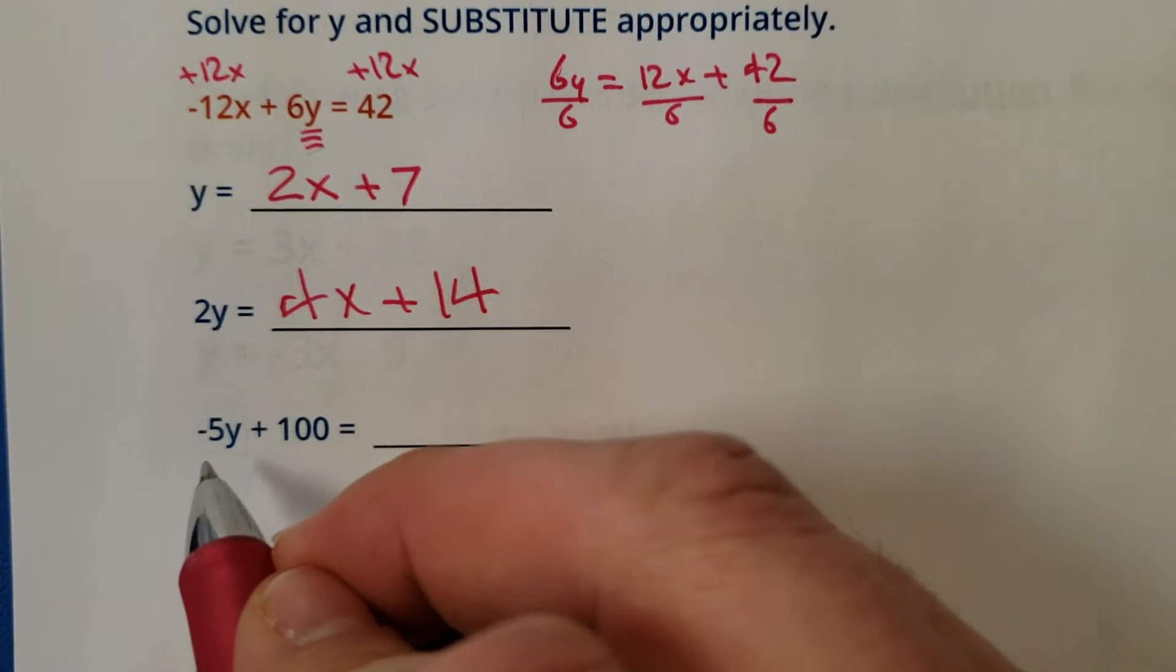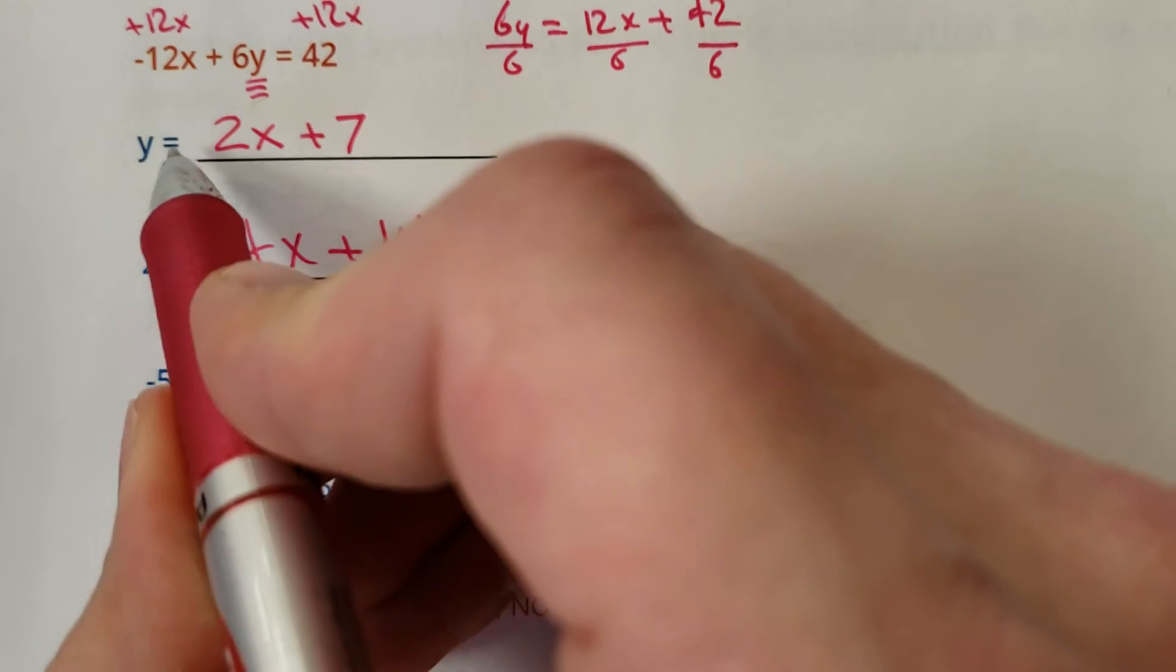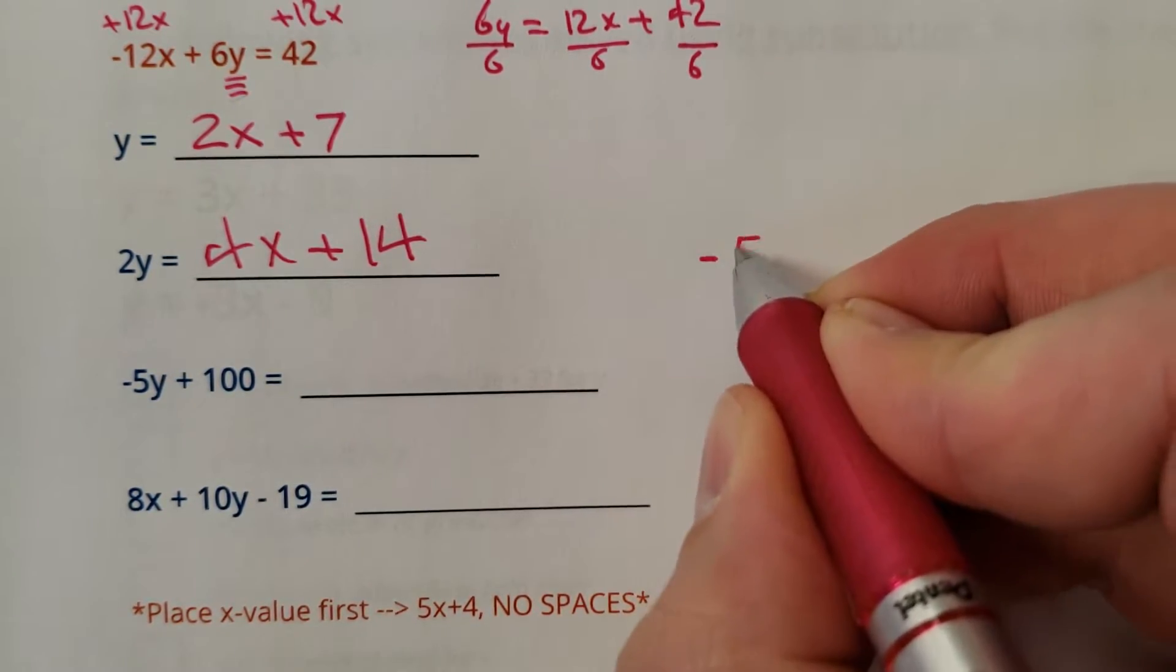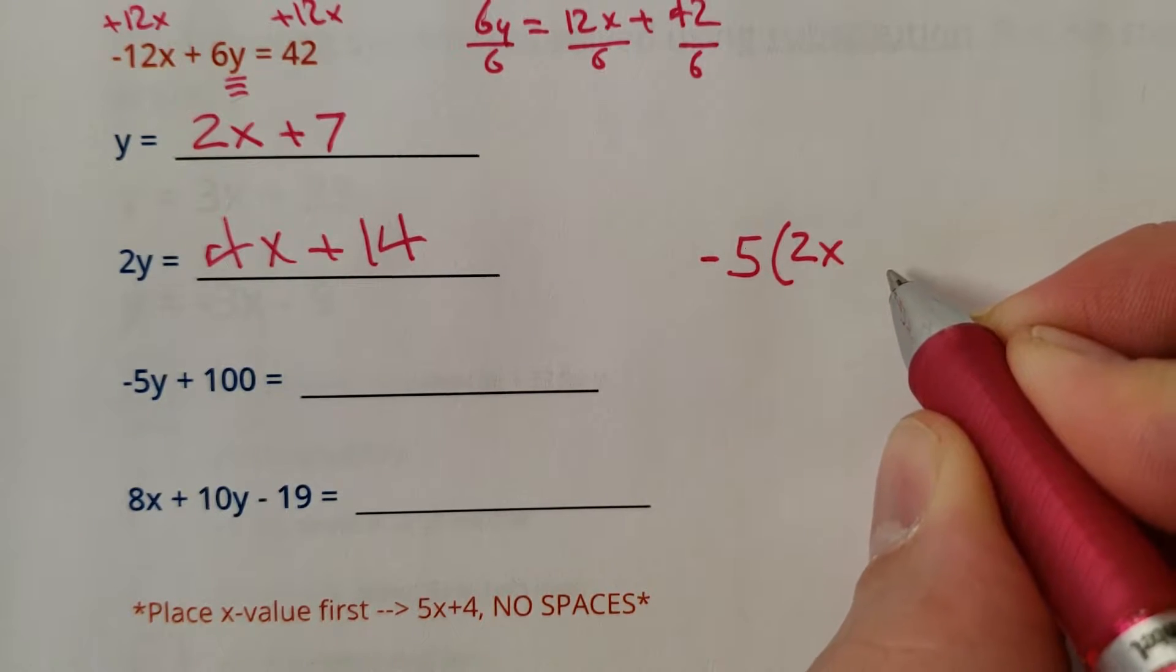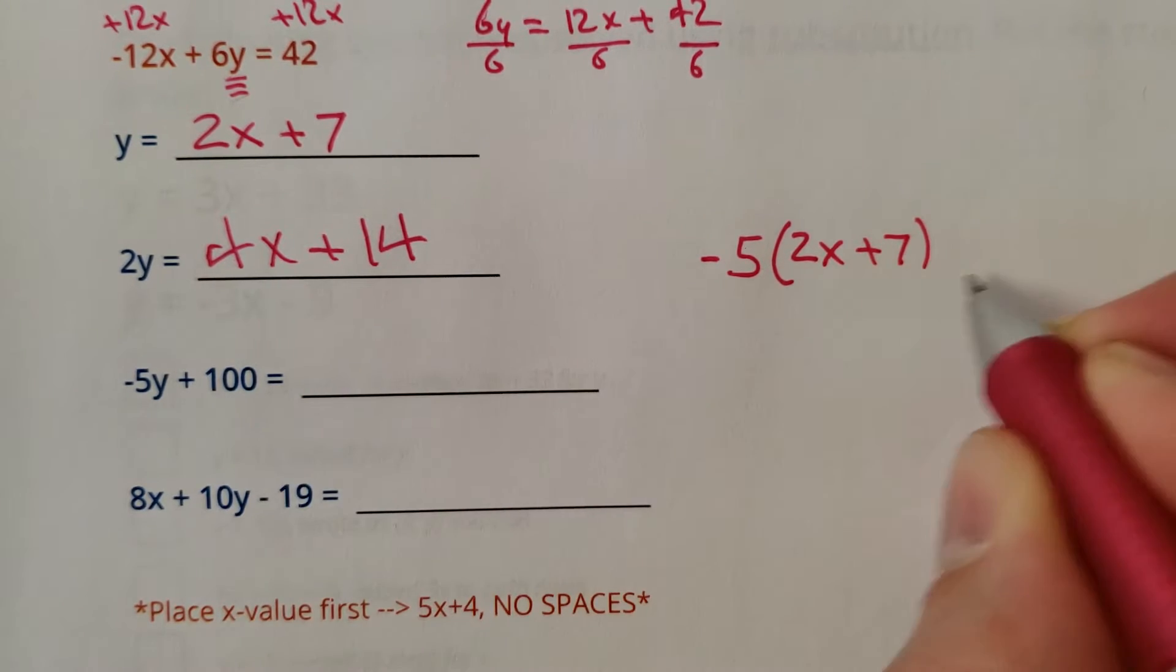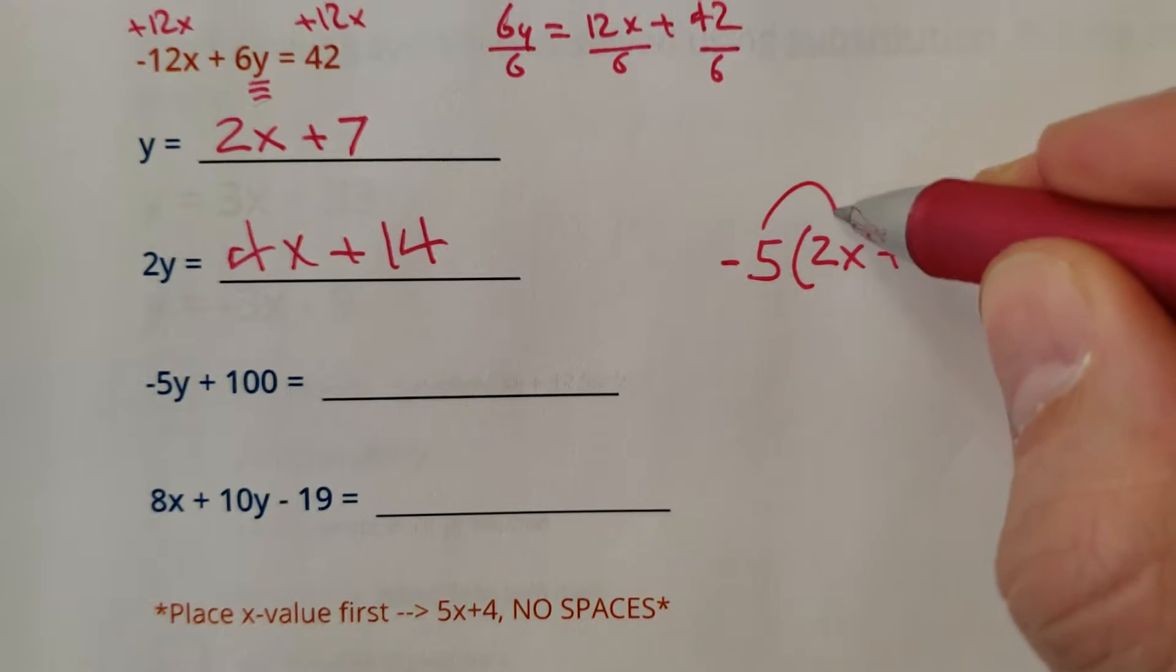What does a negative 5y plus 100 equal? Well, here's what I would do. I would substitute in the y and just simplify it here. So we have a negative 5 times y. What does y equal? y equals 2x plus 7. And there's that plus 100. So we'd have to distribute the negative 5.